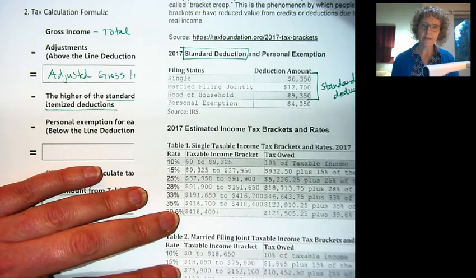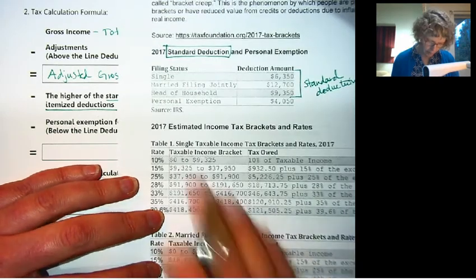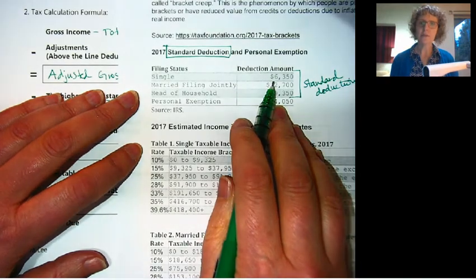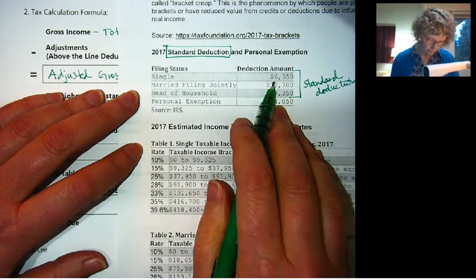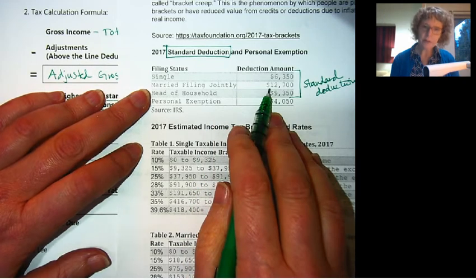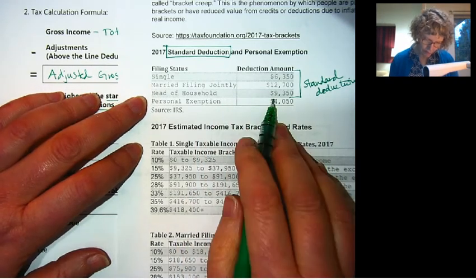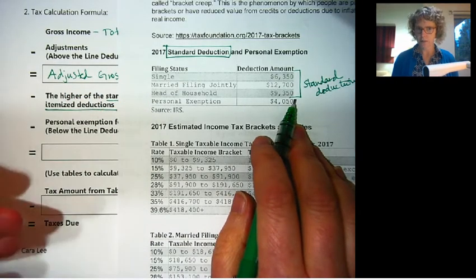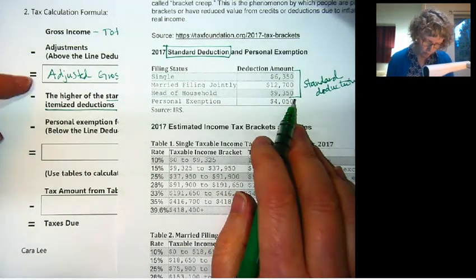So depending on your filing status, if you're filing single, you get to deduct $6,350 from your income, from your AGI. If you're married filing jointly, $12,700. Head of household, $9,350. So this is an additional benefit. You get to subtract this amount from your income.